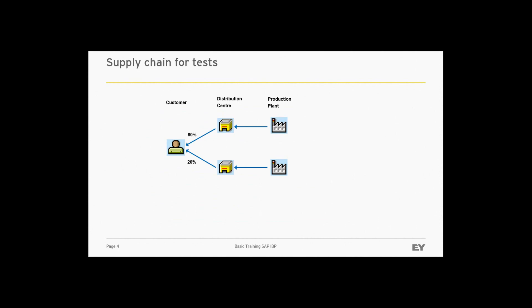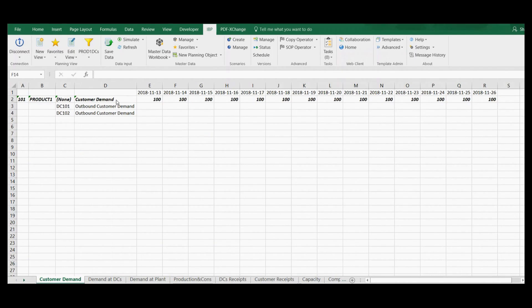First, let's see the supply chain used in this demonstration. We have only one product sold to one customer from two distribution centers. Each distribution center is supplied by a separate plant, and they supply the only customer in predefined proportions of 80 to 20 percent. To view and analyze the supply planning situation, we can define appropriate planning views.